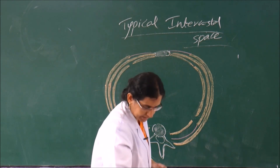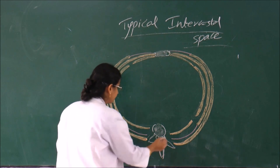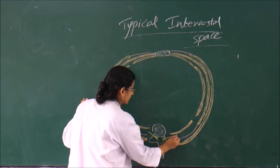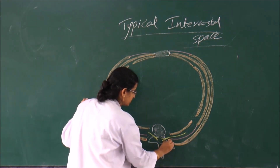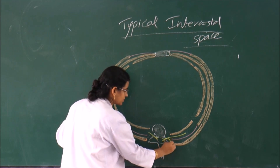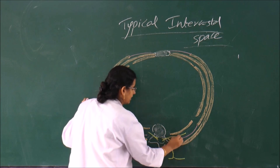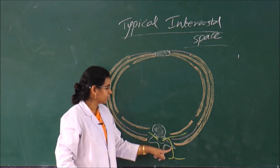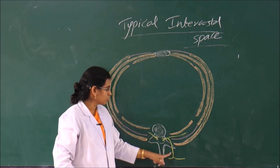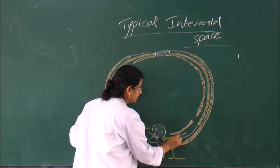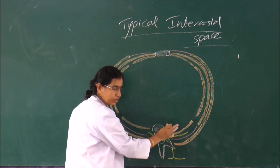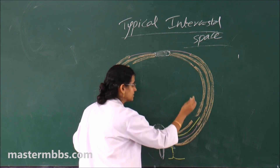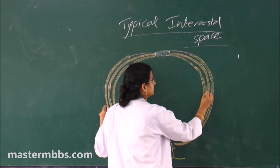Now you can draw a typical intercostal nerve in this space. A typical intercostal nerve is formed by the union of two roots. This is the spinal nerve, which gives rise to a dorsal primary ramus. The spinal nerve divides into a dorsal ramus and a ventral ramus. The dorsal ramus goes to supply the muscles and skin of the back. The ventral ramus runs in the costal groove of the corresponding space — in the neurovascular plane, meaning between the internal intercostal muscle and transversalis thoracis. When it reaches the mid-axillary line, it gives the lateral cutaneous branch.